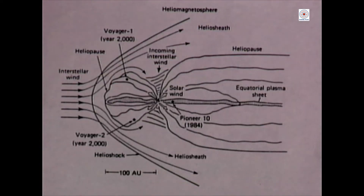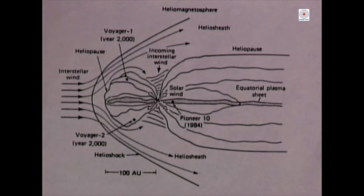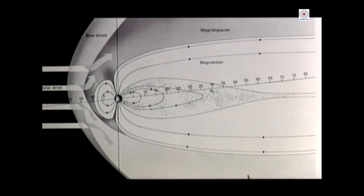Does the solar wind have any effect on us? It fills the whole heliosphere and, of course, it hits the planets, including the earth. Since it is magnetized — it's a fully ionized plasma, a mixture of ions and electrons — it carries along the solar magnetic field. That interacts with the earth's magnetic field in the sense that it is diverted around. But the varying pressure of the solar wind causes varying phenomena to happen on the earth.